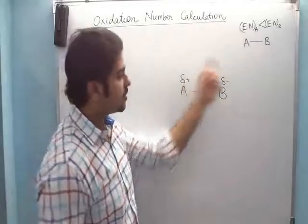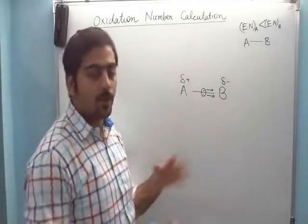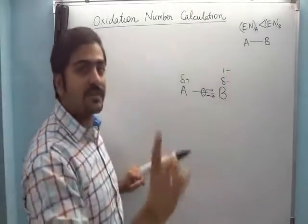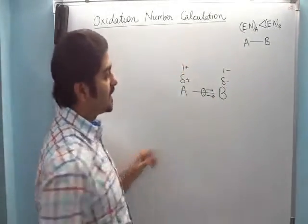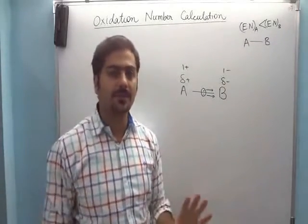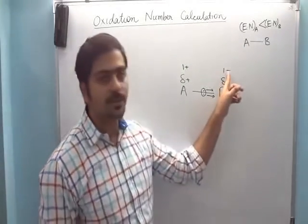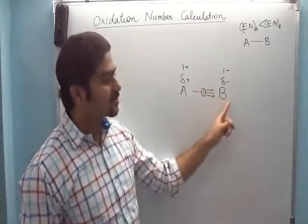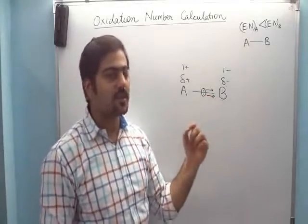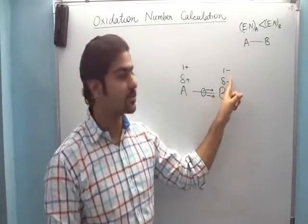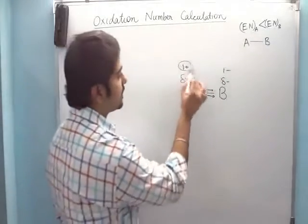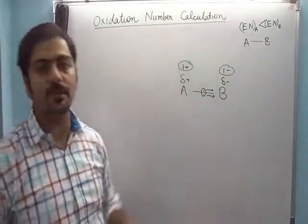These are the original partial charges. We can say that A-B is a dipole. What is Oxidation Number? Oxidation number is a hypothetical charge — we write delta minus as one minus and delta plus as one plus, even though these are not the real charges. If they were actually one minus or one plus, it would be an ionic bond, not a covalent bond. Oxidation number simply tells us which element will have a negative charge. Since both electrons go towards B — one of which was already B's — the extra electron gives B an oxidation number of minus one, and A gets plus one.